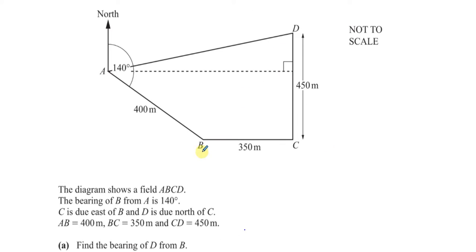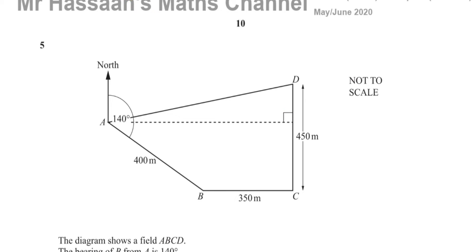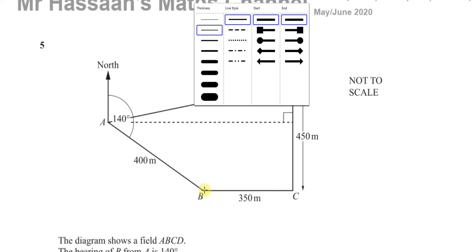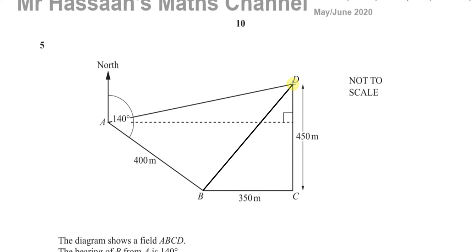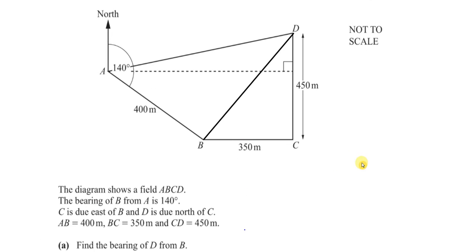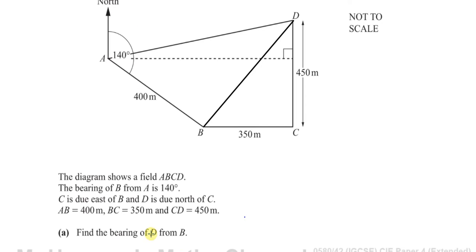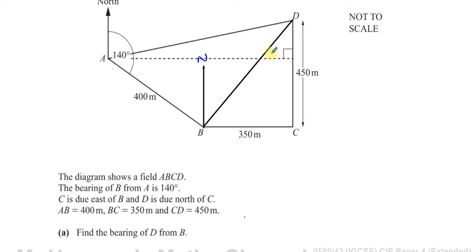We need to find the bearing of D from B. I'm going to draw a straight line joining B and D. For three-figure bearings, the letter after the word 'from' is where you measure the angle. The bearing is always measured from the north line at that point, and it's always measured in the clockwise direction until you're facing the point you need to face.